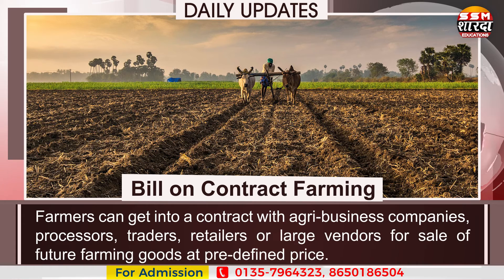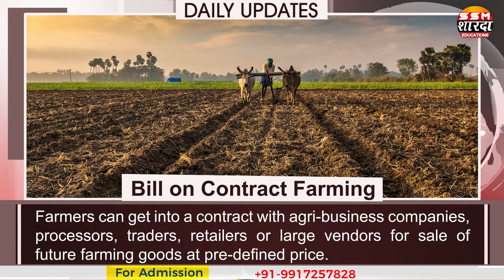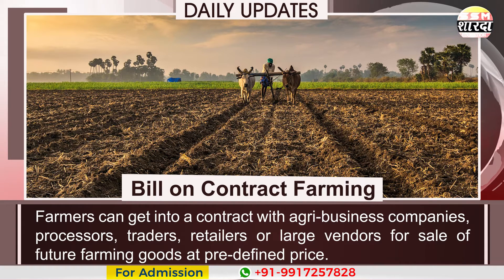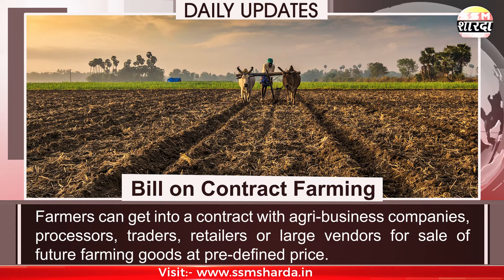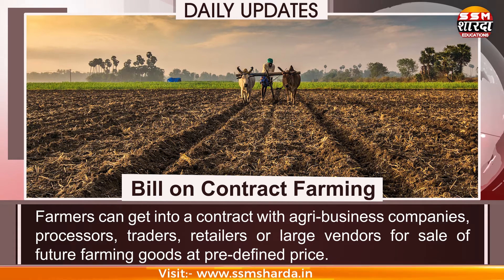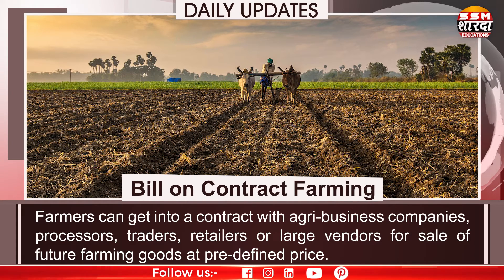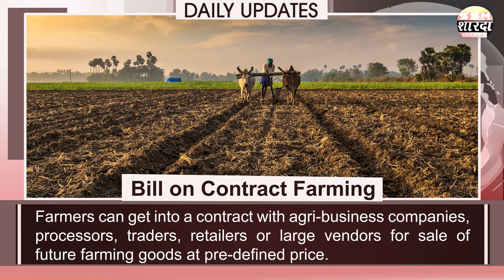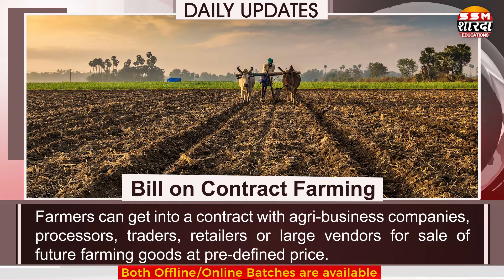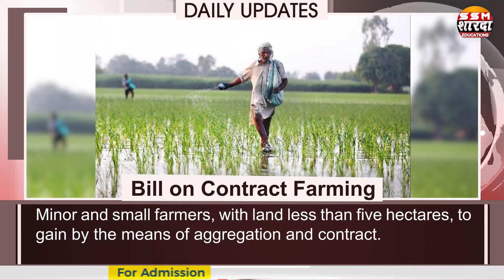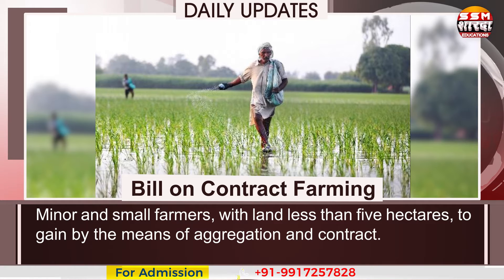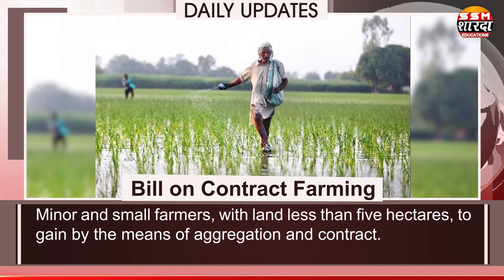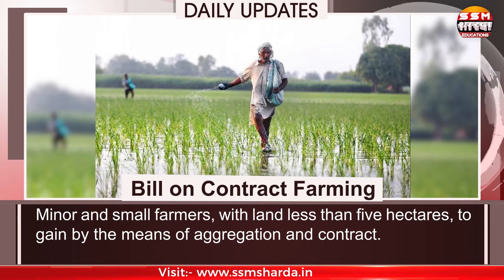Secondly, the Farmer Empowerment and Protection Agreement of Price Assurance and Farm Services Bill 2020. Provisions: farmers can get into a contract with agribusiness companies, processors, traders, retailers or large vendors for the sale of future farming goods at a predefined price. Minor and small farmers with land less than 5 hectares stand to gain through aggregation and contract. Marginal and small farmers account for 86% of total farmers in India.